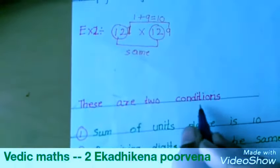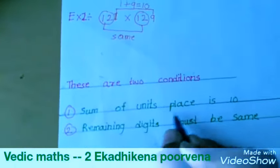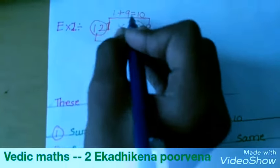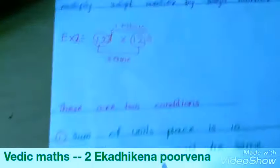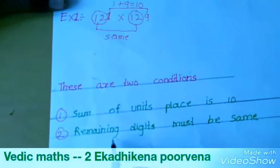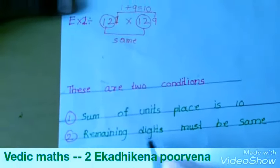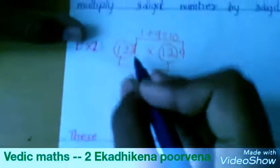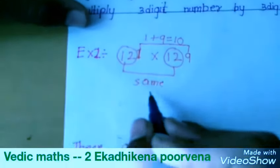These are two conditions. First, the sum of the unit digits is 10 — 1 plus 9 is equal to 10. Second, the remaining digits must be the same — 12 and 12 is same.